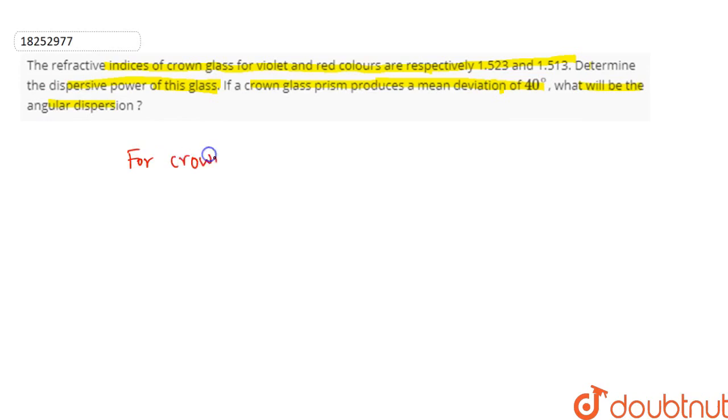For crown glass, what is μ? μ is equal to μ violet plus μ red divided by 2, which is equal to 1.522 plus 1.514 divided by 2. This is 1.518.